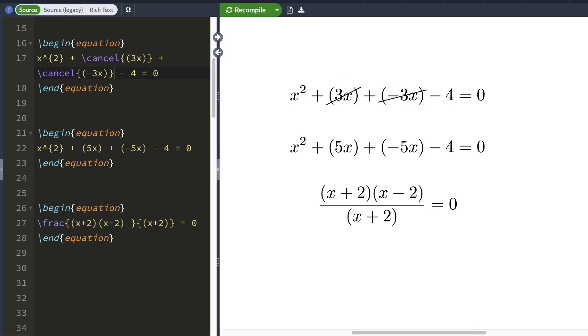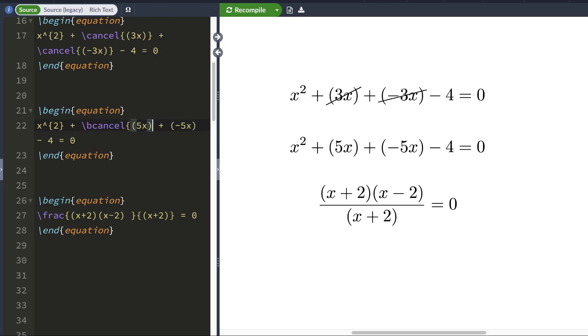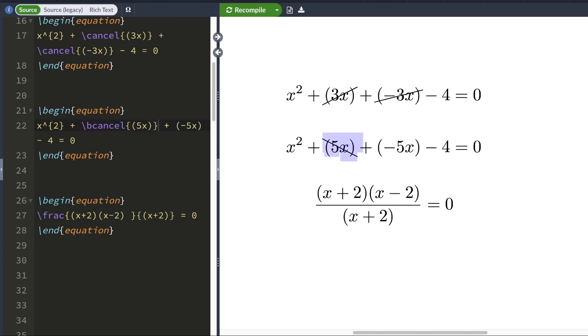Another command offered by the cancel package is bcancel. In the second equation, I want to cancel out this 5x here, so I can use the bcancel command. I'm going to house this 5x inside curly braces. When I hit compile, this 5x will be canceled. This crossout or slash is from top left to bottom right.